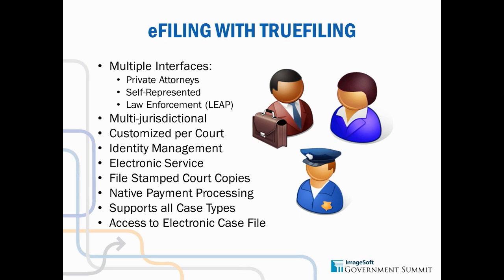Let's start with the first interface — getting the information through the door. Getting that information in the past was bringing paper case documents to a counter, providing them to the clerk, and the clerk feeding them into whatever system they had. Maybe you've taken the next step of scanning those documents. The next step after that is e-filing, and we provide a product called True Filing, which has a few different interfaces for each of the individual electronic filers: private attorneys, self-represented, and law enforcement, which is our True Filing LEAP product.